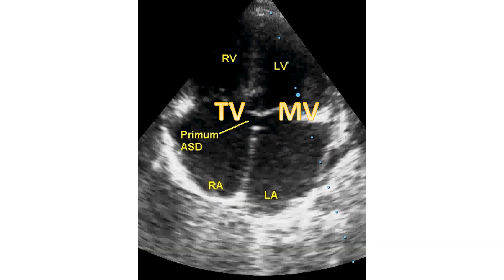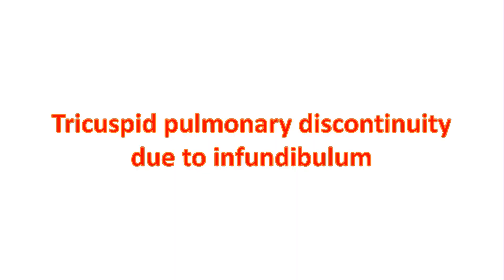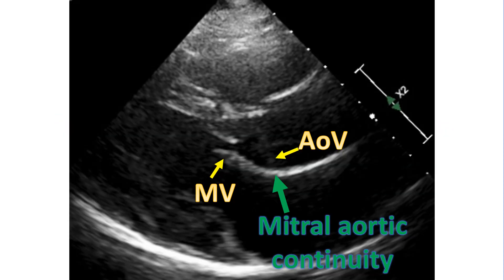The tricuspid valve has an attachment to the ventricular septum, while the mitral valve does not. However, the position of AV valves is not useful in the presence of an inlet-type ventricular septal defect, where the AV valves are at the same level. Right ventricular trabeculation is coarser than left ventricular trabeculation. The right ventricle has an infundibulum which separates the tricuspid and pulmonary valves, while on the left side there is mitral-aortic continuity.